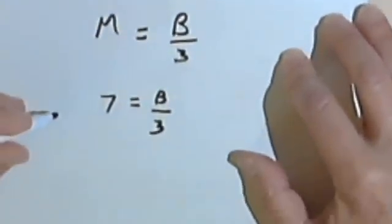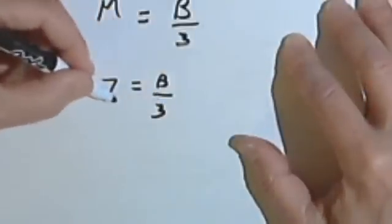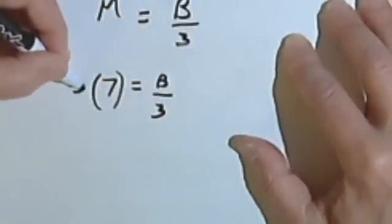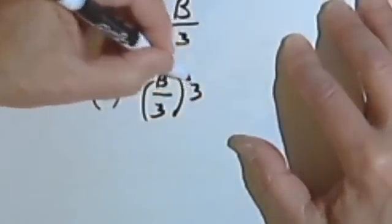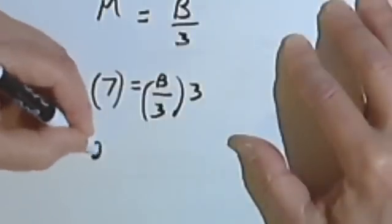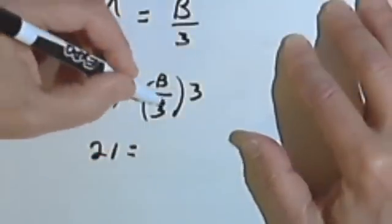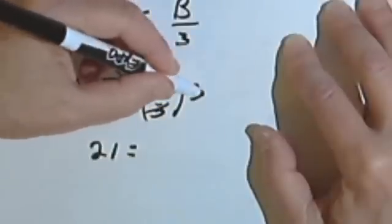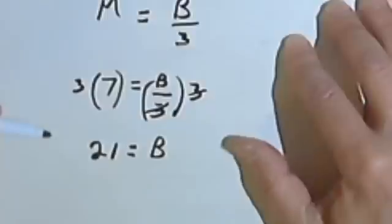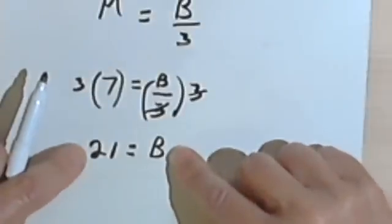If I want to find out what the B equals, I'll multiply both sides by 3. On the left side, I'm going to get 21. On the right side, the 3's will cancel, and I'll just have B. So Brian's age is 21.